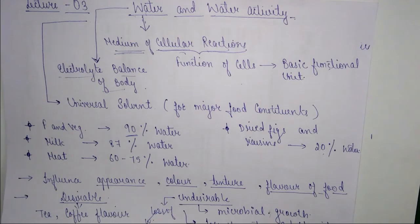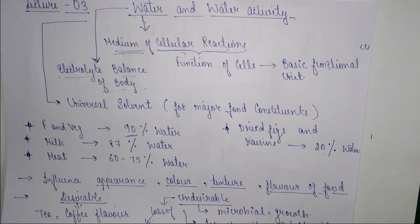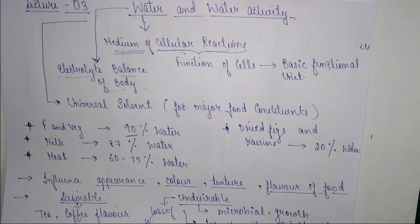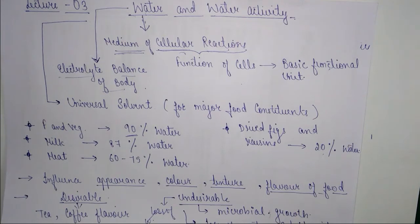There are also undesirable effects of water in food. The most important undesirable effect of high moisture content is microbial growth — more water in the food means it is more prone to microbial growth. For example, fresh fruits and vegetables have maximum water and therefore the least shelf life. Pasteurized milk lasts only two or three days, and fresh milk only a few hours. In contrast, dried fruits and dried cereals have much longer shelf lives. Water is a major component affecting shelf life.